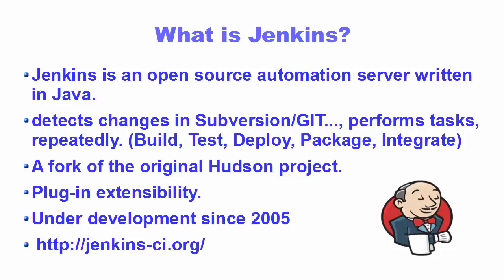Let's talk about some of the history behind Jenkins. Jenkins is a fork of the original Hudson project and it was under development since 2005. Hudson was first released by a developer called Kosuke Kawaguchi of Sun Microsystems. In 2010, Oracle bought Sun Microsystems, and due to this some naming dispute occurred and Hudson was renamed to Jenkins. Oracle continued the development of Hudson as a branch of the original, and Jenkins became the fork of Hudson.